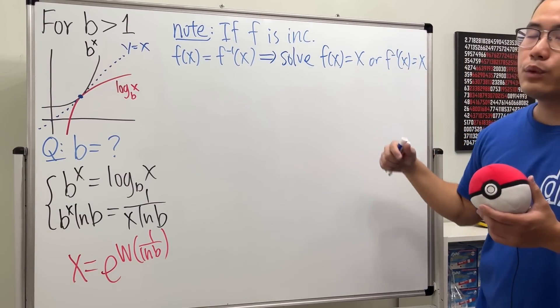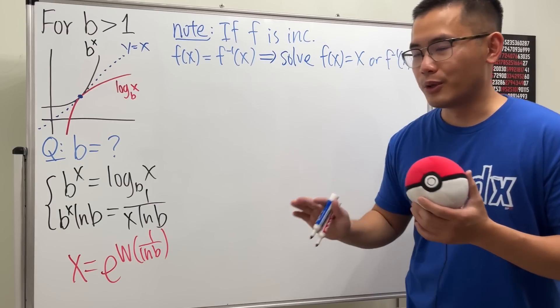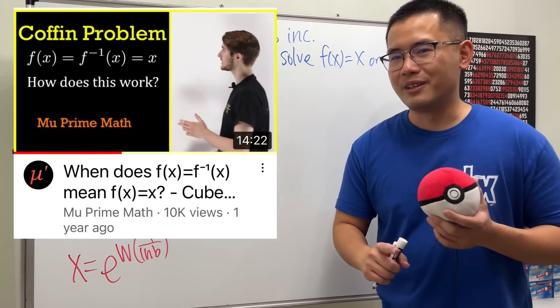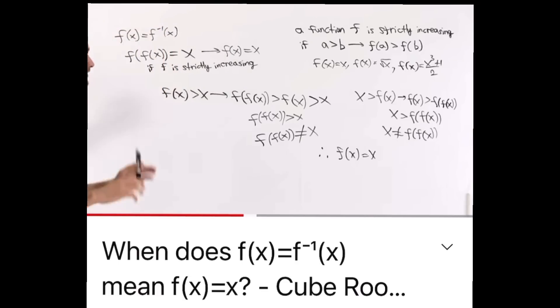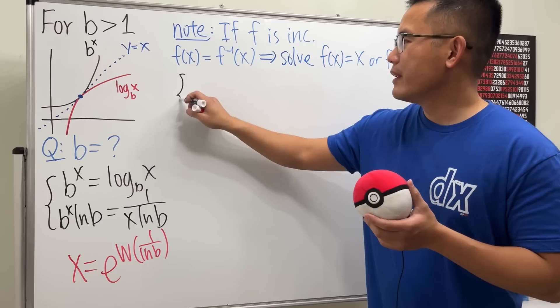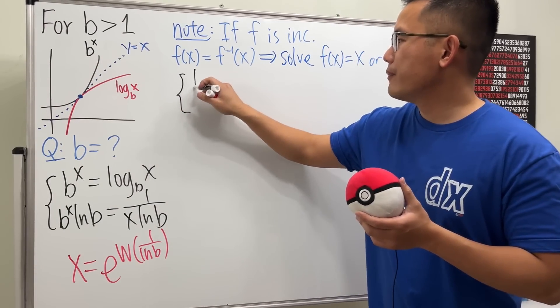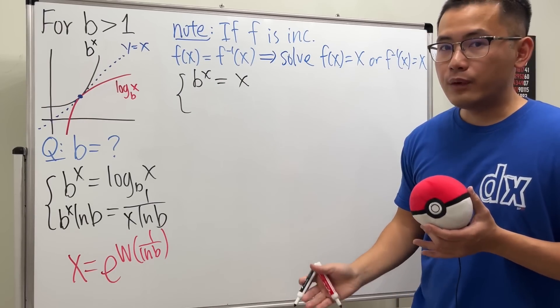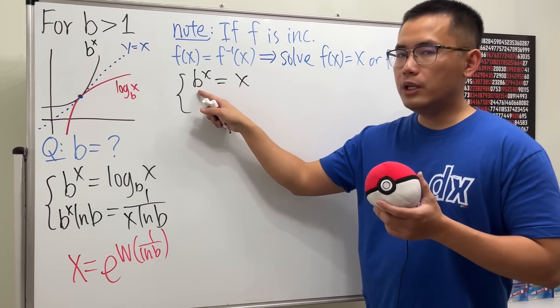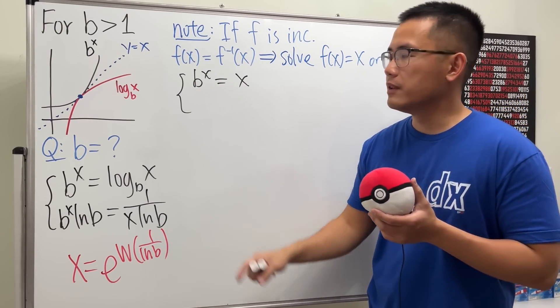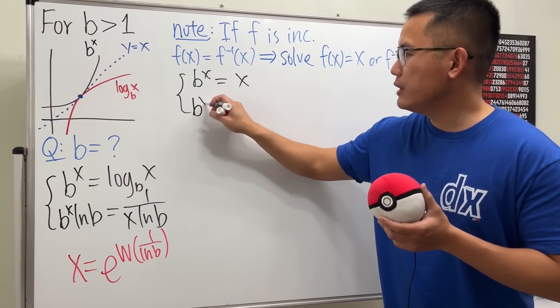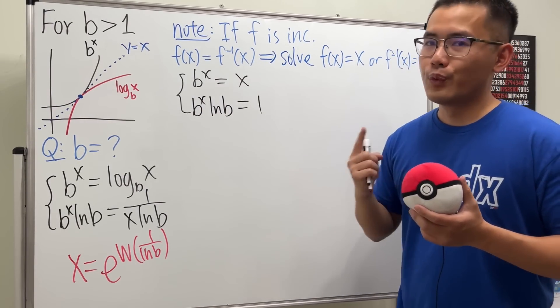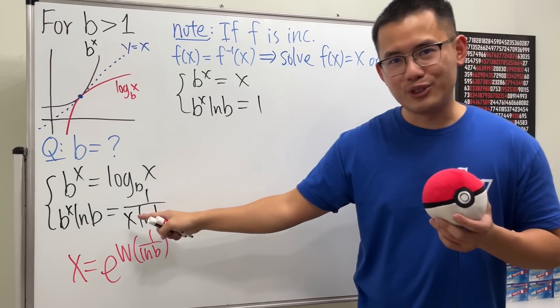Just a quick shout out to Mu Prime Math because I learned this from him. If you want a detailed explanation, check out his video. Let's use b^x equals x, and we do the same thing: make sure they have the same derivative. Differentiate this, we get b^x times ln(b), and differentiate that, we get 1. So much easier, isn't it?